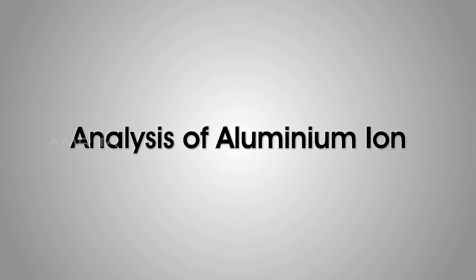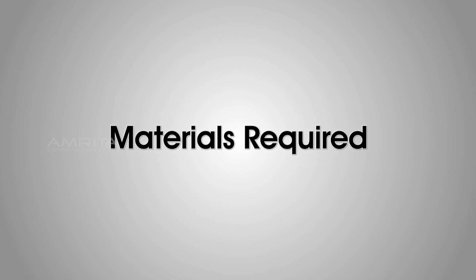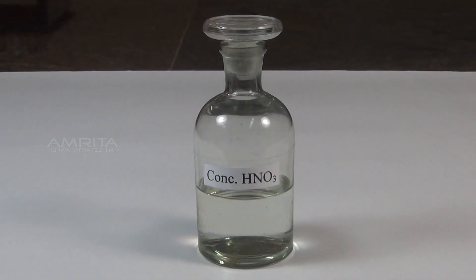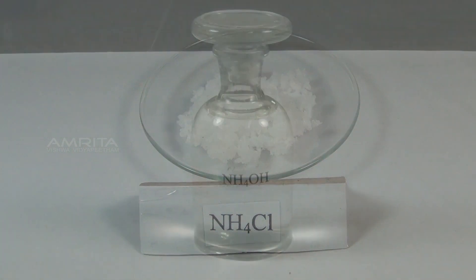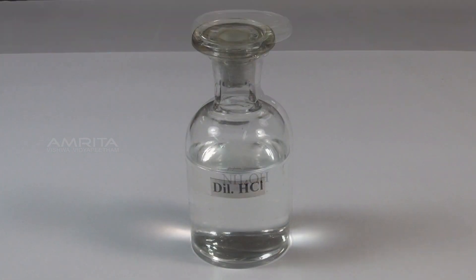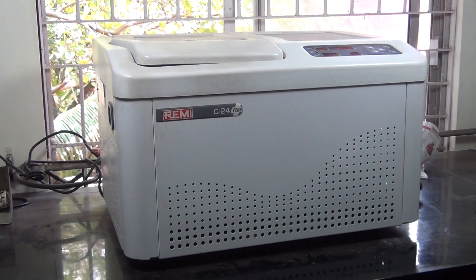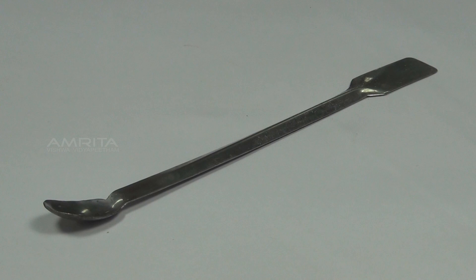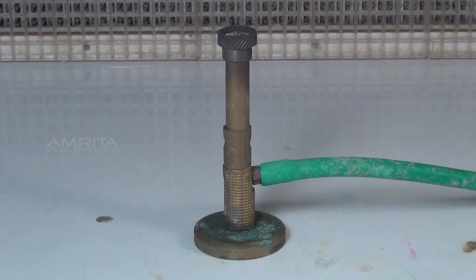Next, we look at the analysis of the aluminium ion. Materials required are salt solution in a test tube, concentrated nitric acid, ammonium chloride, ammonium hydroxide, dilute hydrochloric acid, centrifuge, centrifuge tube, droppers, spatula, test tube holder and Bunsen burner.